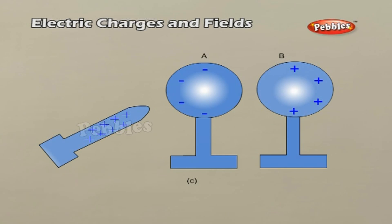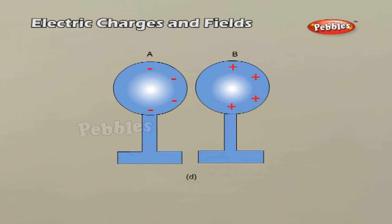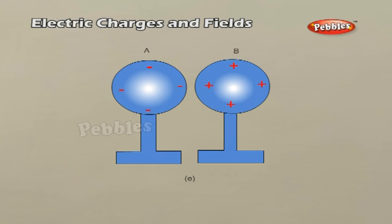Now separate the spheres by a small distance while the glass rod is still held near sphere A, as shown in figure C. The two spheres are found to be oppositely charged and attract each other. Remove the rod — the charges on the spheres rearrange themselves as shown in figure D. Now separate the spheres apart; the charges get uniformly distributed over them as in figure E. In this process, the metal spheres will be equal and oppositely charged. This is charging by induction.